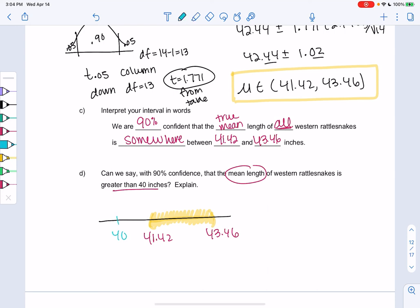Yeah, 40 would be on the outside, right? So we're confident that the average length of rattlesnakes is definitely bigger than 40.